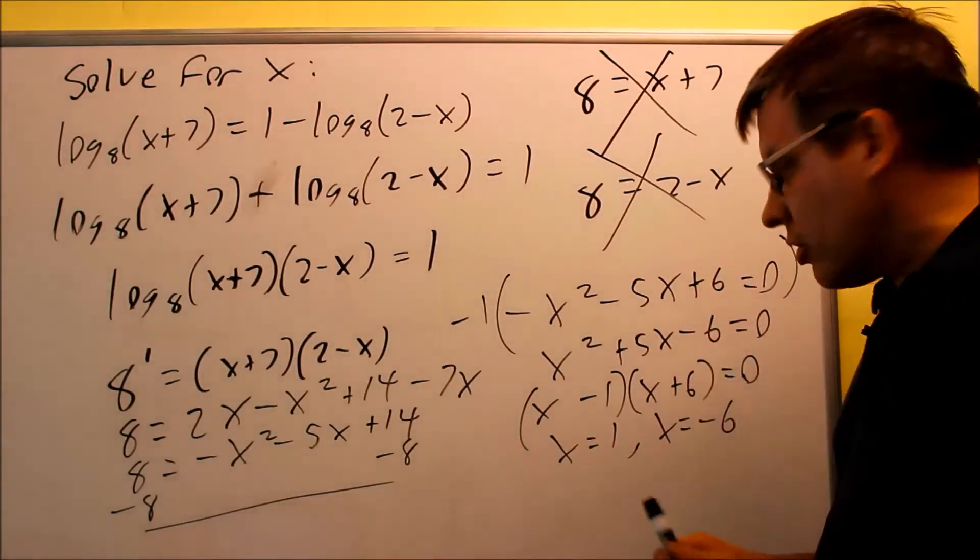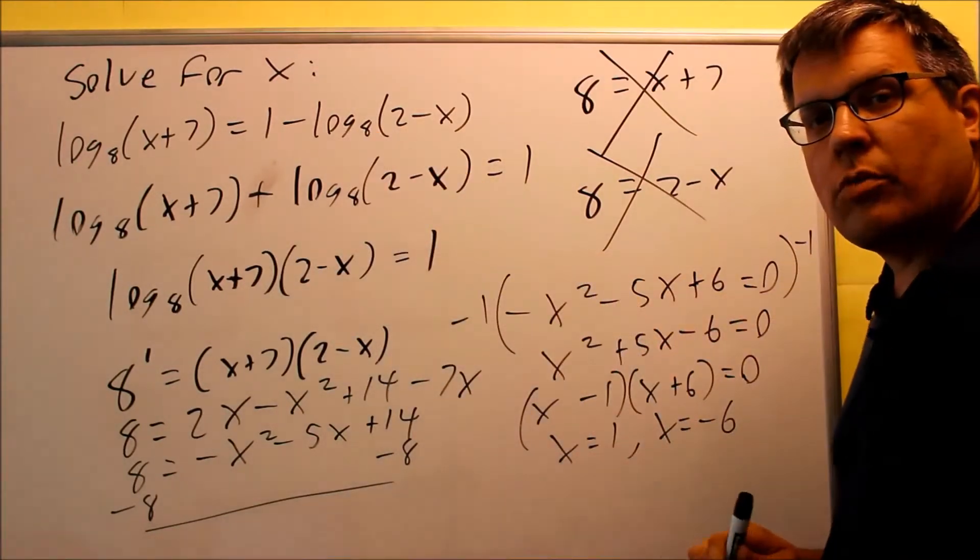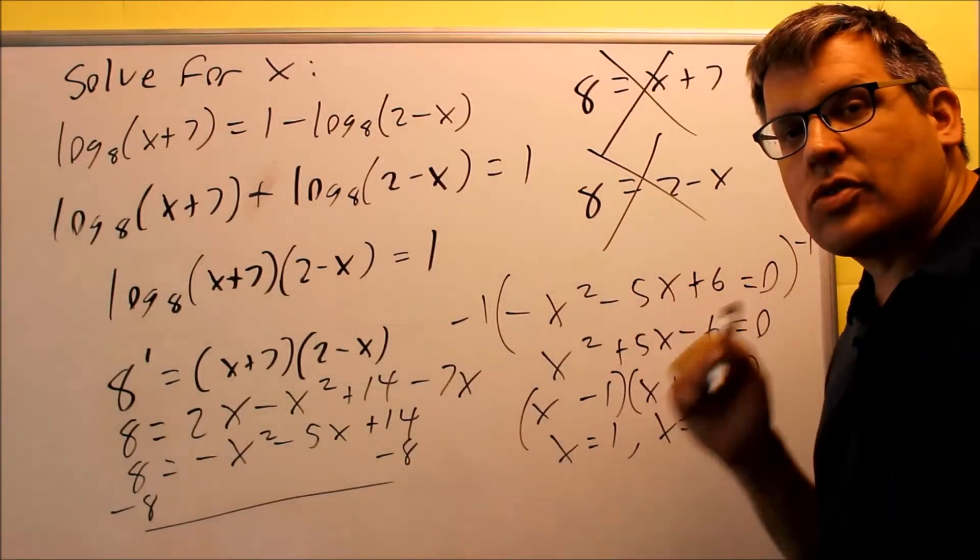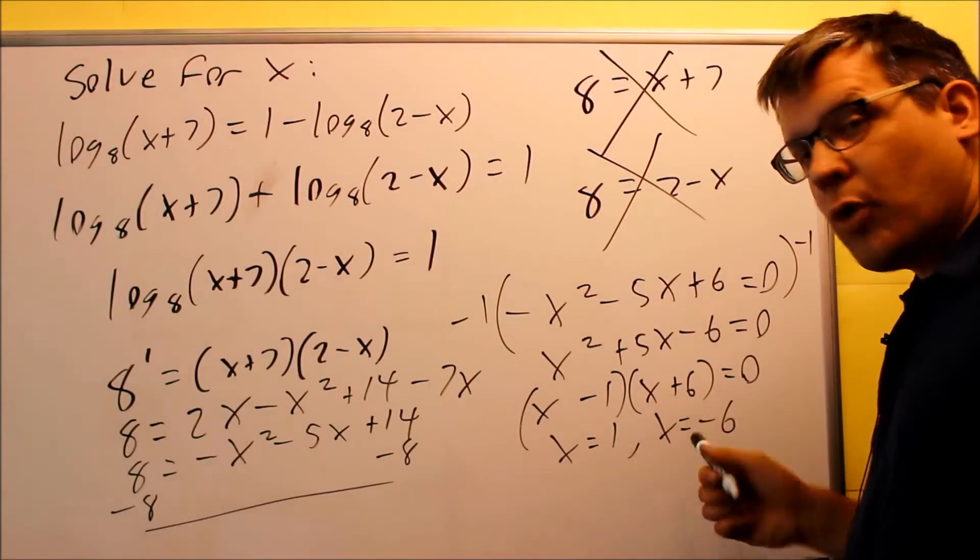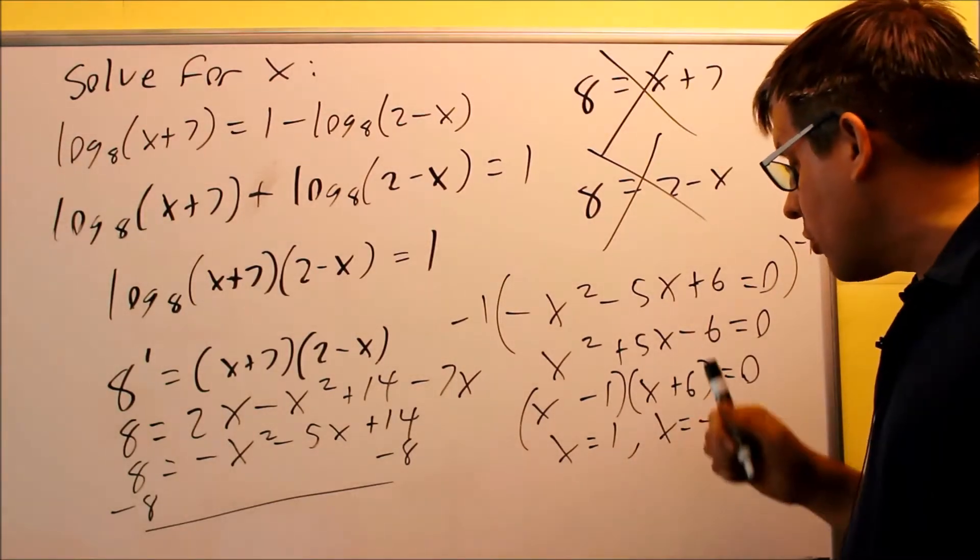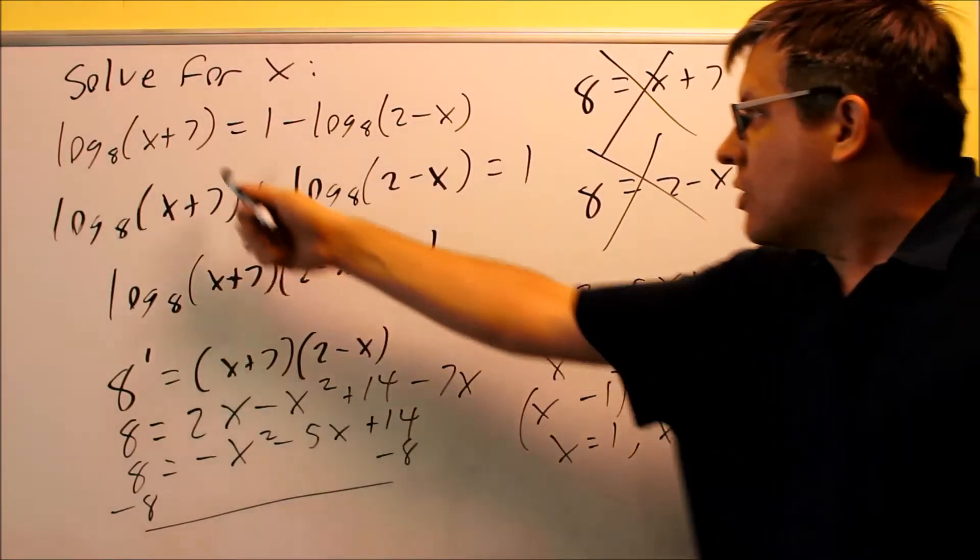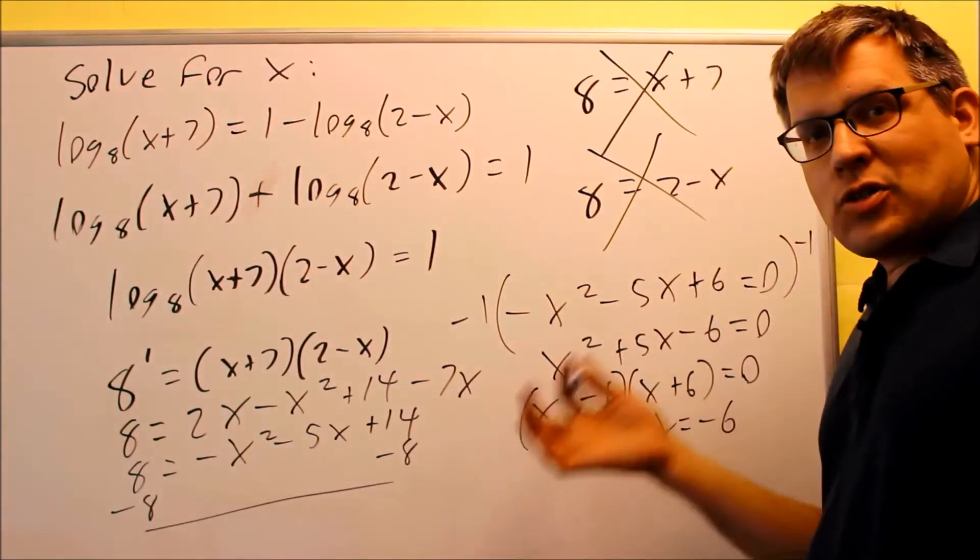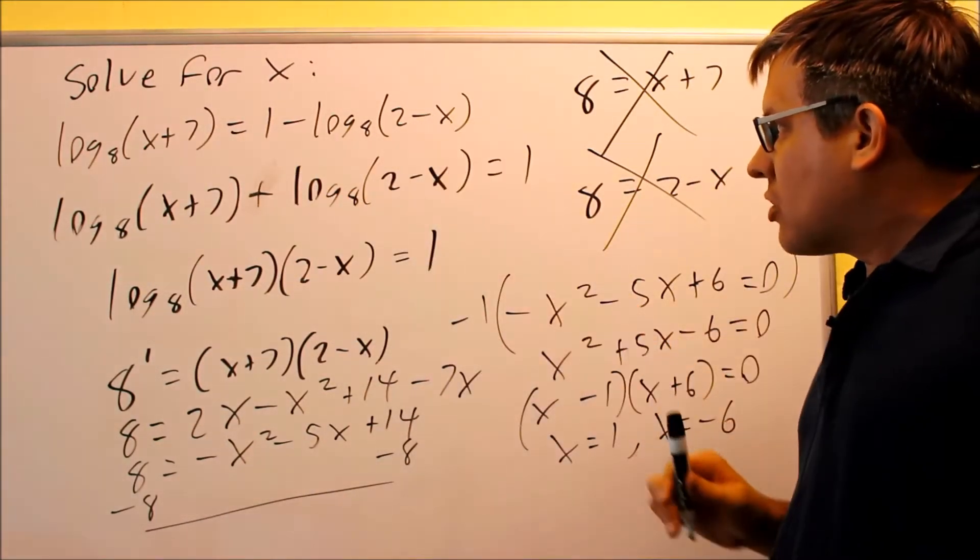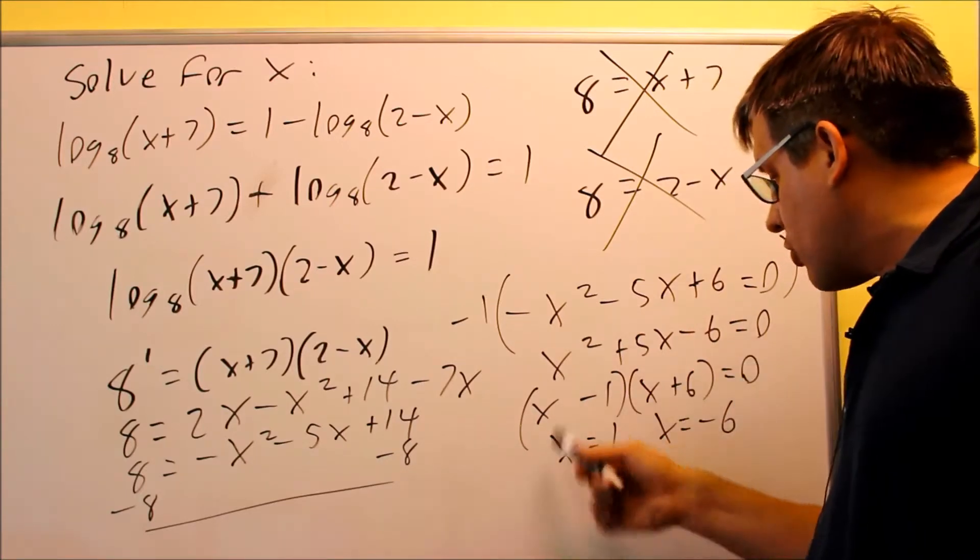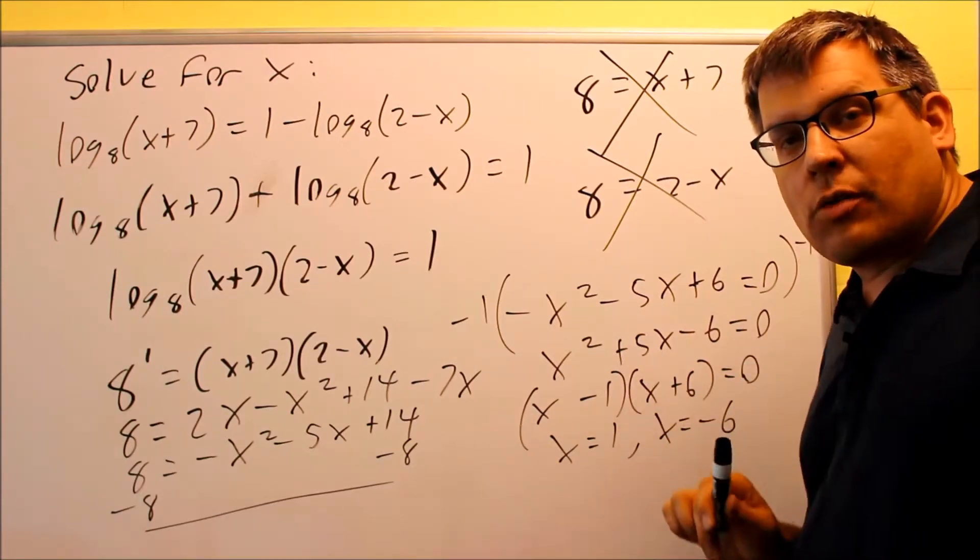You want to make sure you put both these answers back into the original one. You want to make sure you don't get a negative number or 0 inside your log. We want to check both of these to make sure we don't get any domain issues. If I put 1 into there, 1 plus 7, that's positive. That's fine. 2 minus 1, that's positive also. So I know for sure x equals 1. That's definitely going to be one of my answers.